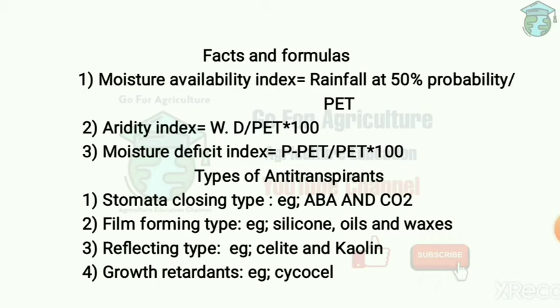Anti-transpirants are materials applied on the plant surface to reduce water loss from the plant. The first type is the stomatal closing type, which reduces water loss through stomatal closing. Examples are ABA and CO2 - these are very important for competitive exams.